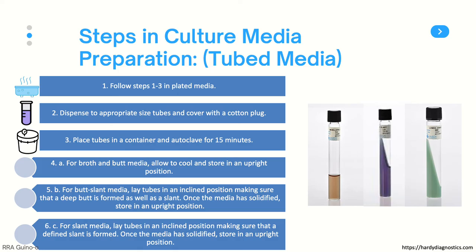Now let's look at the steps for preparing culture media in tubes. Follow the same first three steps from the previous procedure. Then dispense to the appropriate size tubes and cover with a cotton plug, or if using screw cap tubes, cover them with the caps. Once autoclaved, you can proceed in several ways. For broth and butt media, simply allow the tubes to cool in an upright position and store them upright as well. For butt slant preparations, lay the tubes in an inclined position, making sure that a deep butt is formed as well as a slant. Once the media has solidified, store the tubes in an upright position.